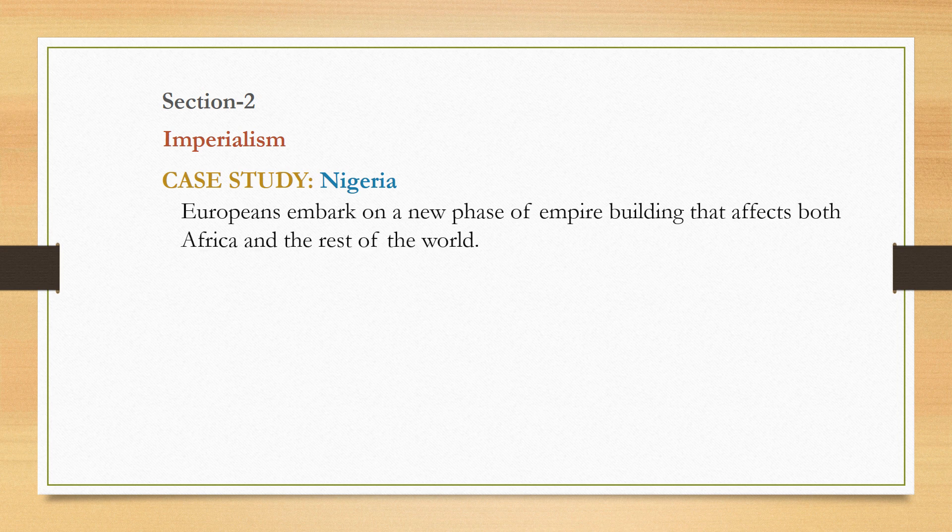Chapter 27, Section 2. The title of it is Imperialism, and today we're going to be using the nation of Nigeria as a case study. We'll be looking at this new phase of empire building that affected Africa, but also affected the rest of the world. We're going to zoom in by looking at what happened with Nigeria.